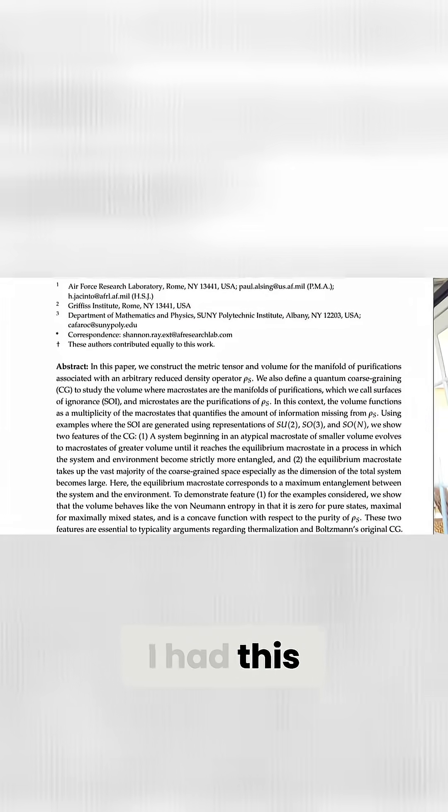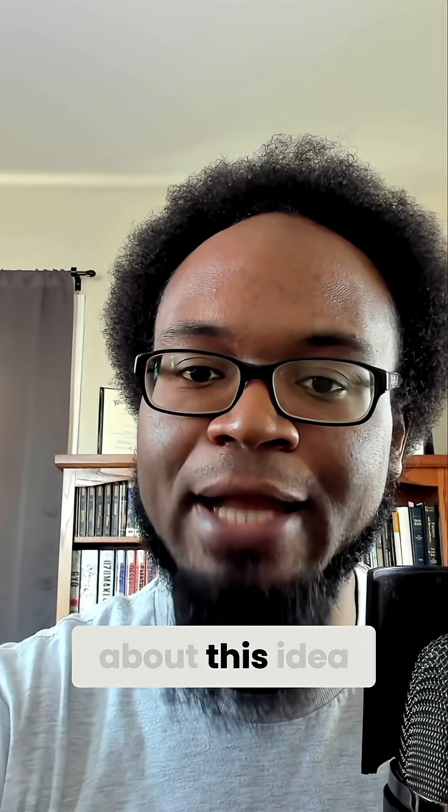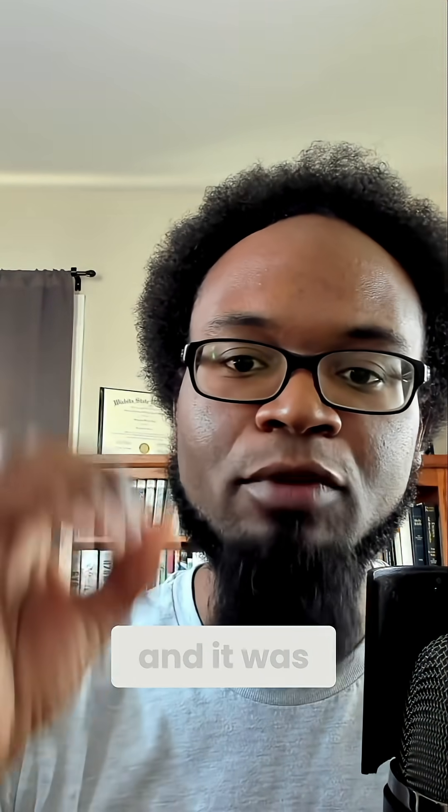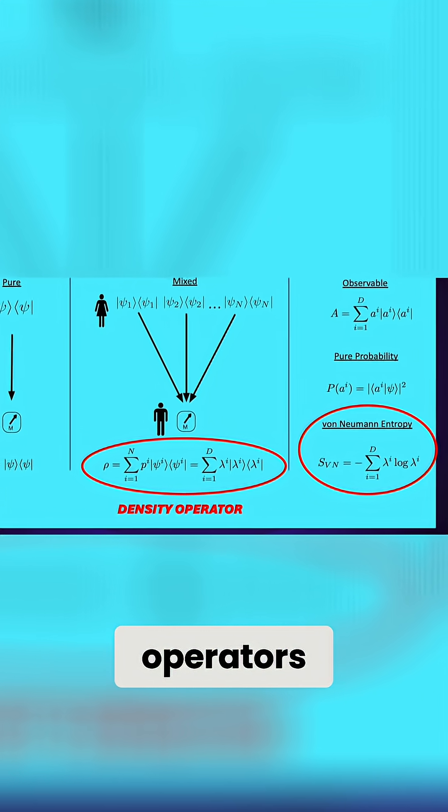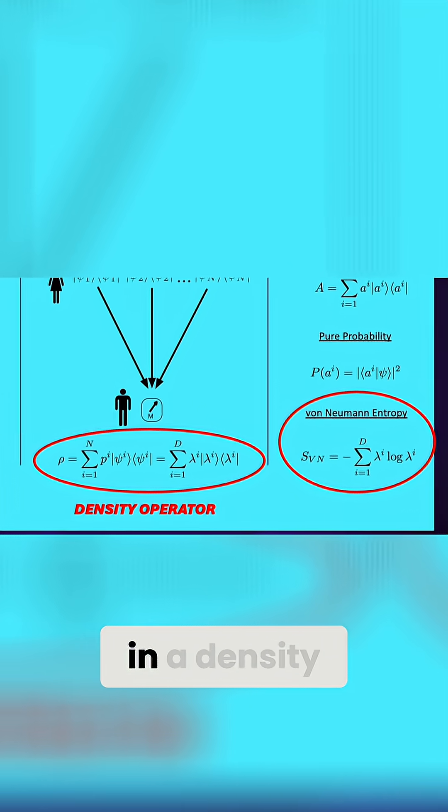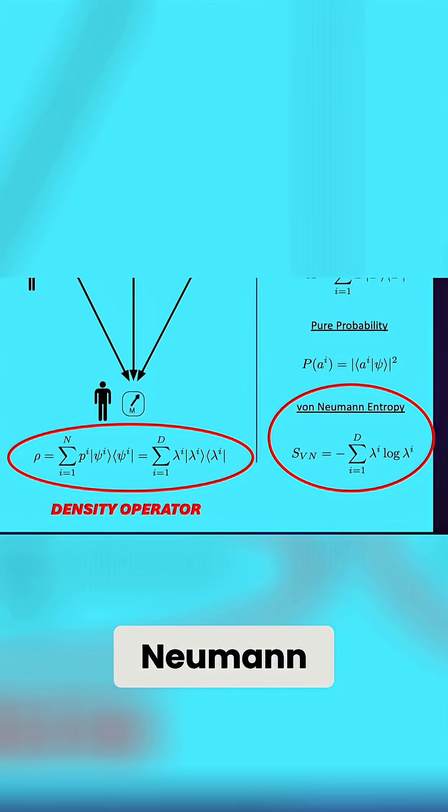I had this intuition about this idea of symmetry and entropy. More information, less information. Less symmetry, more symmetry. In the case of quantum mechanics, the information that I have is contained within our quantum states, which we call density operators. And you can compute the amount of information in a density operator using the von Neumann entropy.